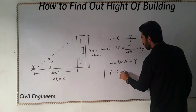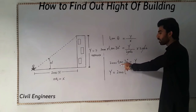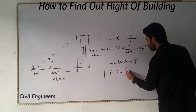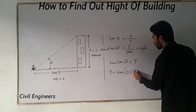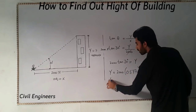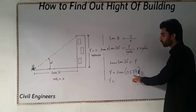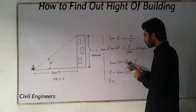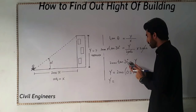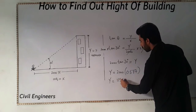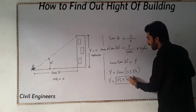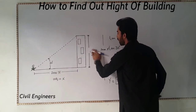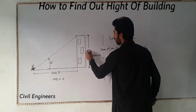Y equals 2,000, and when you use the calculator for sine 30 degrees it will give you 0.577. So Y equals 0.577 multiplied by 2,000. Using the calculator: 2,000 × 0.577 gives you 1,154 feet — that is the height of the building when the angle is 30 degrees and the base length is 2,000 feet.